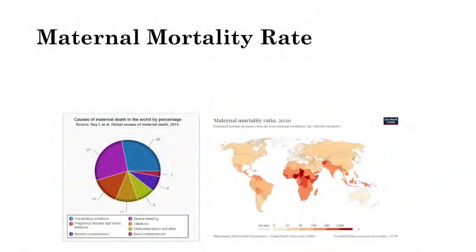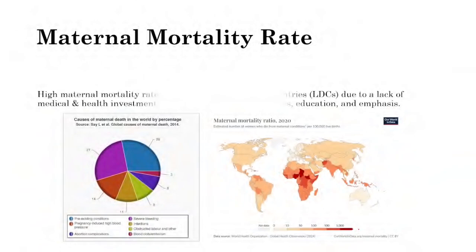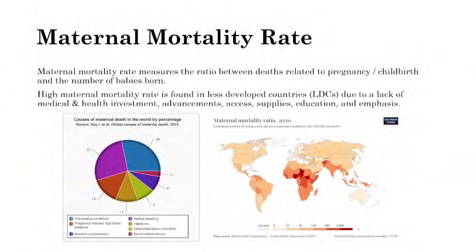Maternal mortality rate is very similar to infant mortality rate — per 100,000 births — and measures the number of women who die from maternal conditions and childbirth. It measures deaths related to pregnancy and childbirth specifically, not all deaths of mothers. High maternal mortality rates are found in areas with higher infant mortality rates — less developed countries — due to a lack of medical and health investment.